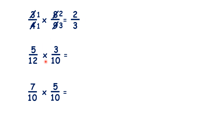So now pause the video and see if you can follow the same steps to multiply 5 twelfths times 3 tenths. 5 and 10 are both multiples of 5, so we can cross simplify by dividing by 5 — that gives us 1 and 2. And 12 and 3 are both multiples of 3, so we can cross simplify to make 4 and 1.